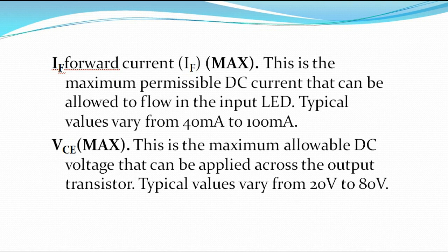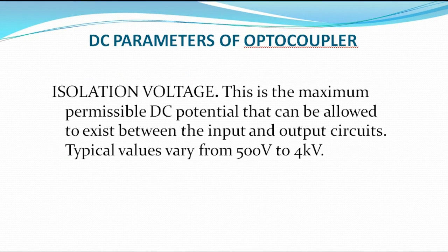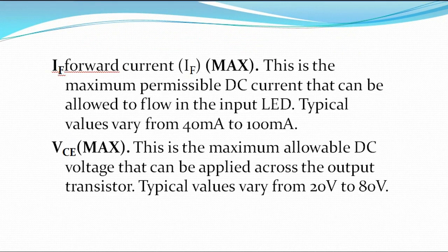The next parameter is VCE max — that means maximum. This is the maximum allowable DC voltage that can be applied across the output transistor. The range is typically from 20 volts to 80 volts. In current, it has from 40 milliamps to 100 milliamps. In voltage, it is from 20 volts to 40 volts. In terms of isolation voltage, the range is from 400 volts to 4 kilovolts. These are the DC parameters.